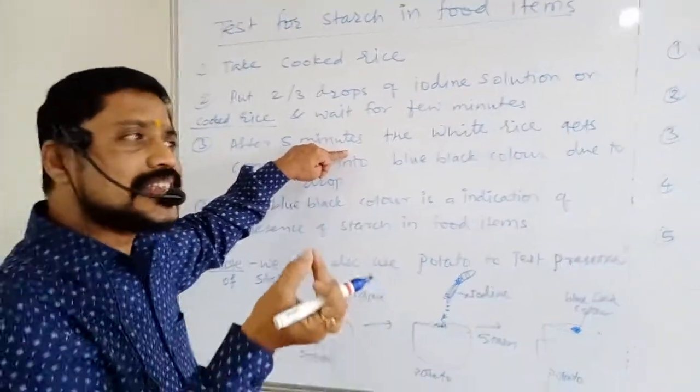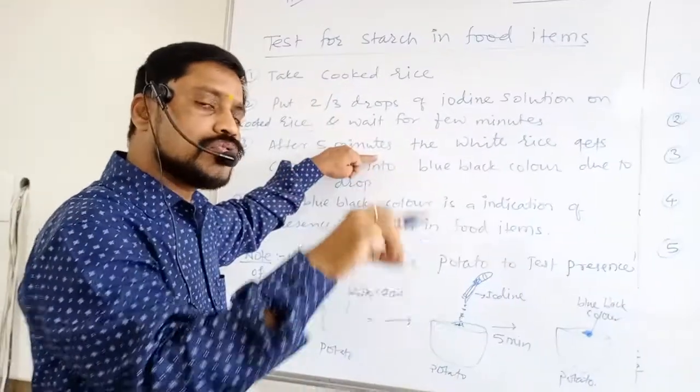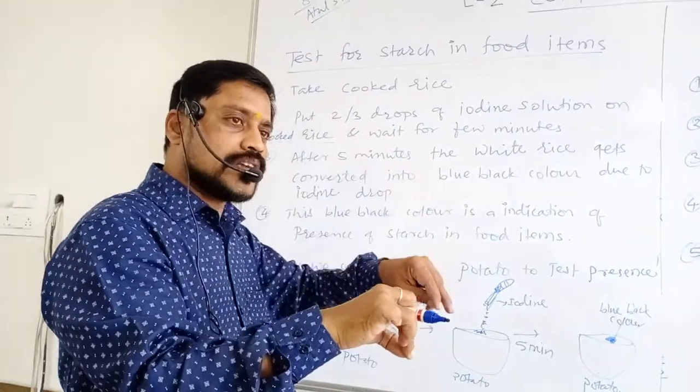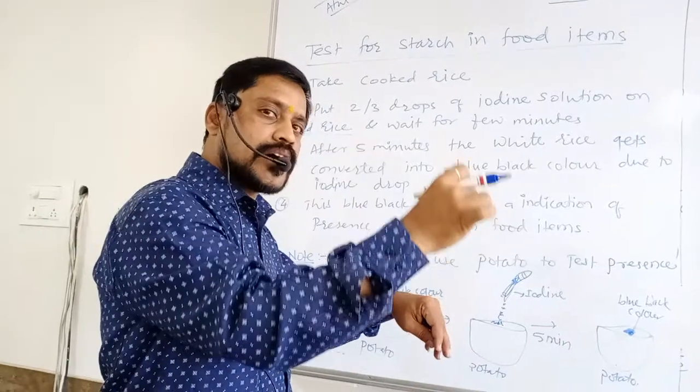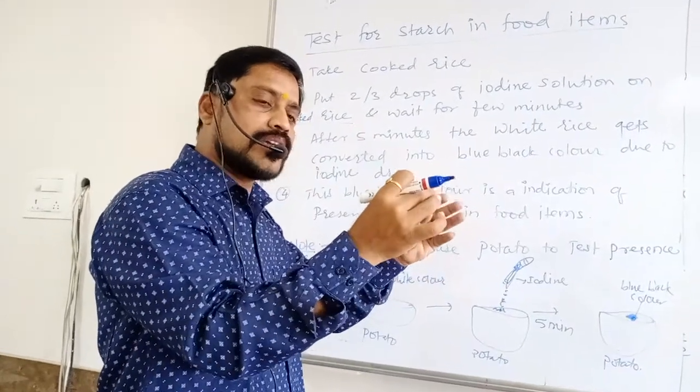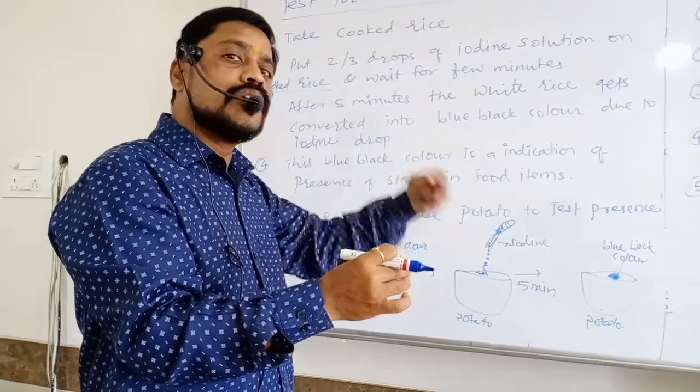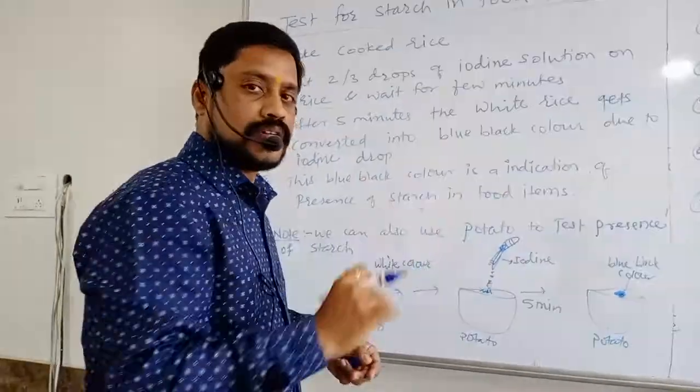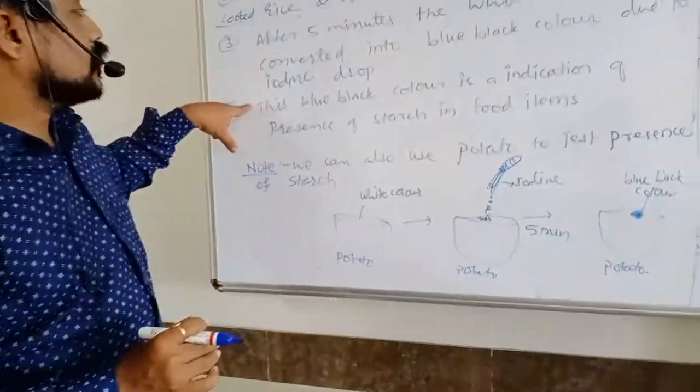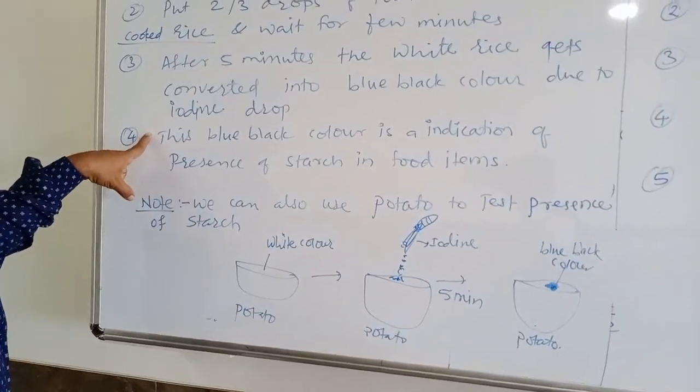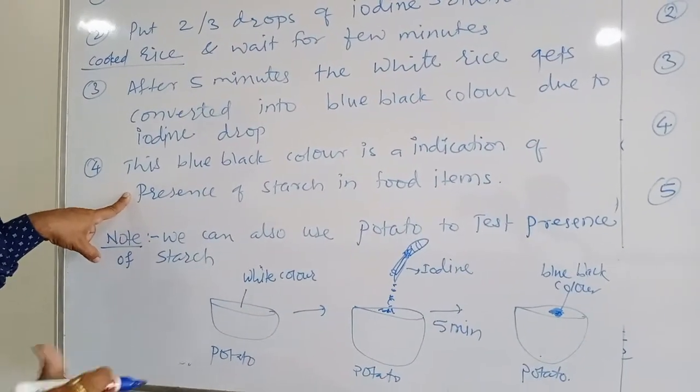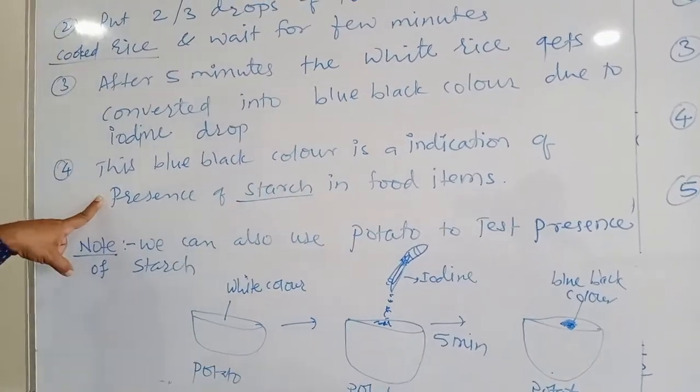Now what has happened after addition of iodine on the starch. When iodine and starch combine they convert that color into blue black color. So this blue black color is the indication of presence of starch in food.